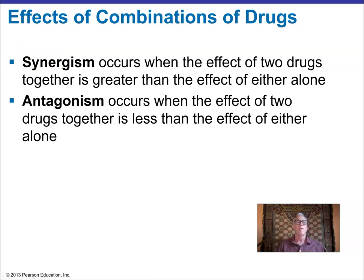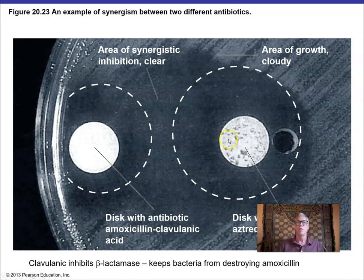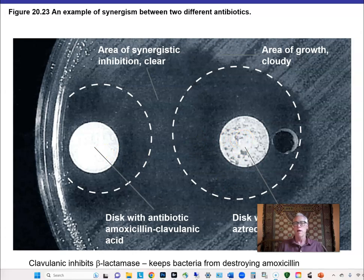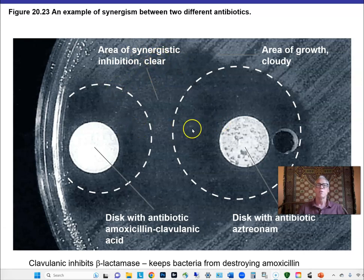Definitions: synergism means combining two drugs produces a greater effect than the sum of each separately. Antagonism means one antibiotic can inhibit the effect of the other. A picture of synergism shows a disk diffusion test where the clear zone between two antibiotic discs is much larger where they overlap together — showing greater inhibition of bacterial growth than either drug alone.